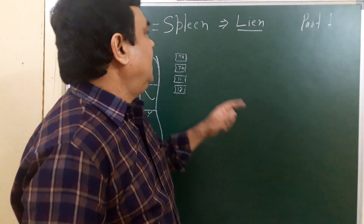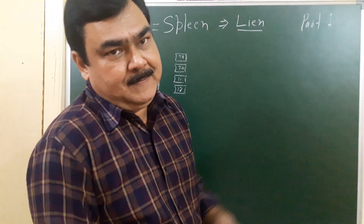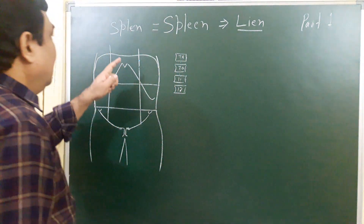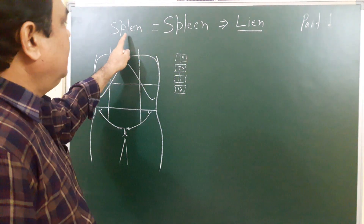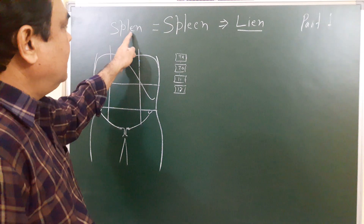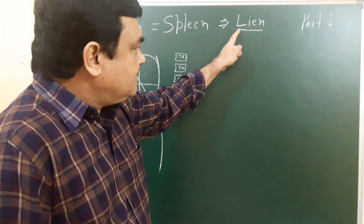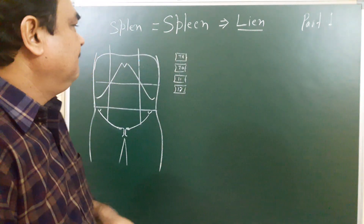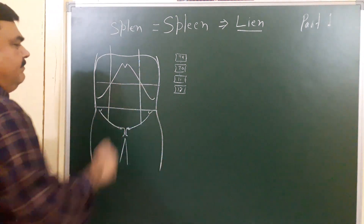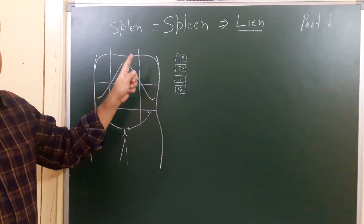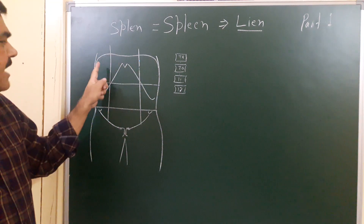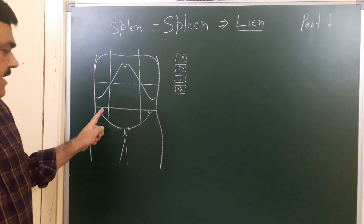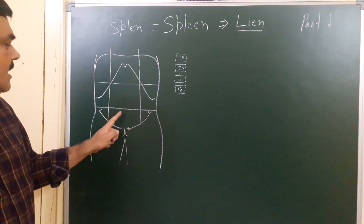We will discuss the spleen, part 1. The spleen is the largest lymphoid organ of the body. The term for the spleen in Greek is 'splen' (S-P-L-E-N) and in Latin it is 'lien' (L-I-E-N) — these are synonyms. Here in this diagram, the abdominal cavity is divided into nine regions: left hypochondrium, right hypochondrium, epigastrium, left lumbar, right lumbar, umbilical, right iliac fossa, left iliac, and hypogastrium.